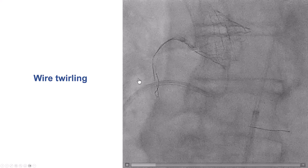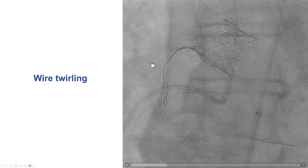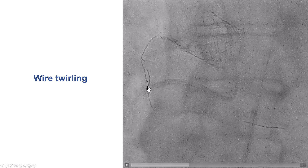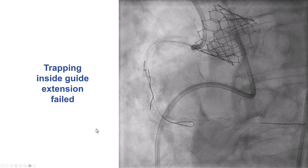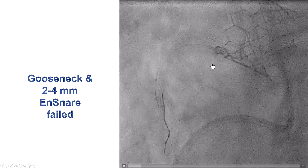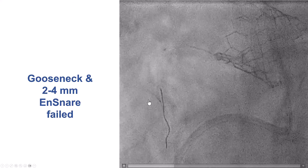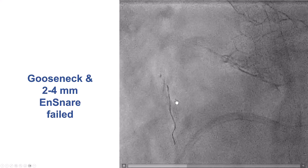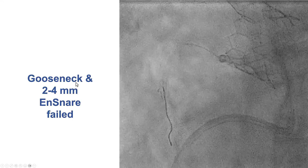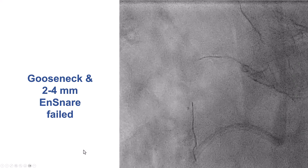We then tried different techniques. We advanced two more guide wires and twirled them together trying to entangle the fragment, but were unsuccessful. We tried a guide extension to get close — that didn't work either. We also attempted retrieval with snares: a 2-to-4 millimeter small three-loop snare, but could not get it over the wire fragment. We also used a small gooseneck snare, also without success.